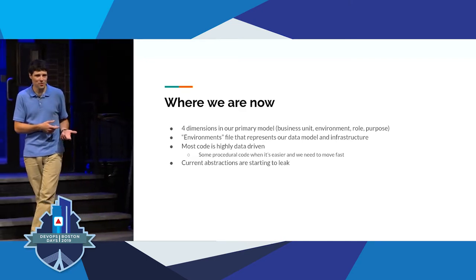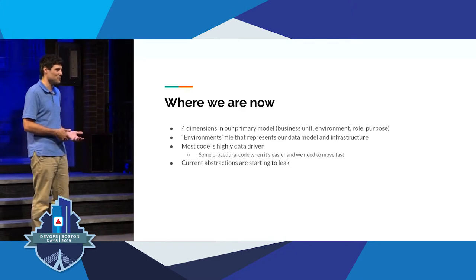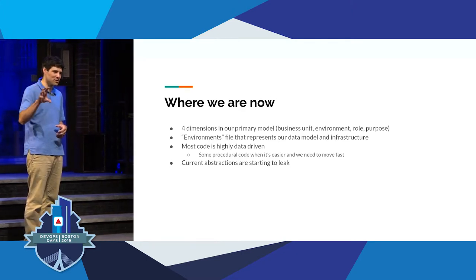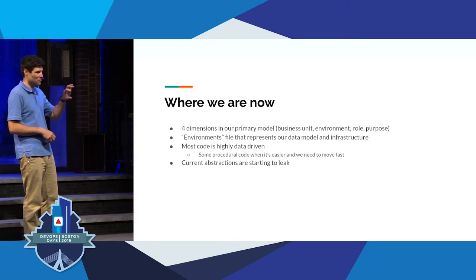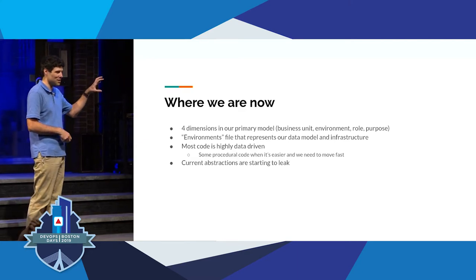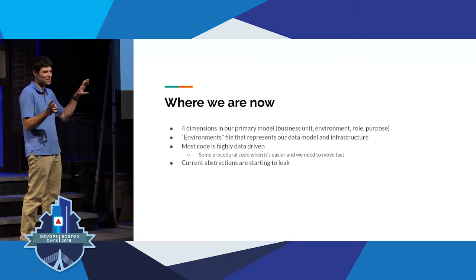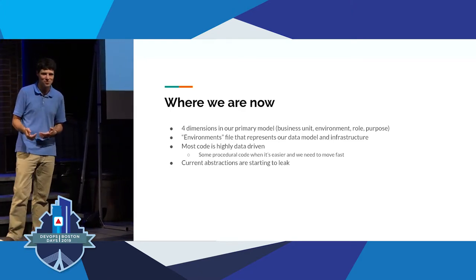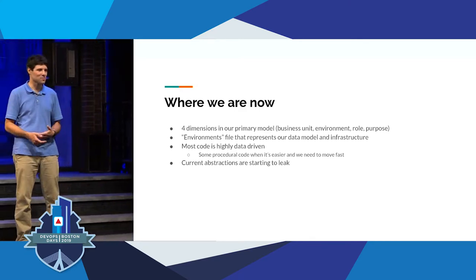The problem we've got now is that our abstractions are starting to leak. Because we didn't define the data model at the outset, we're starting to have cases where for databases we have one set of information, for S3 buckets we started with one set, but then applications needed three different buckets and things became difficult to manage — they don't quite fit into the way we were doing things. That's where the revisit-and-refactor step comes into play.